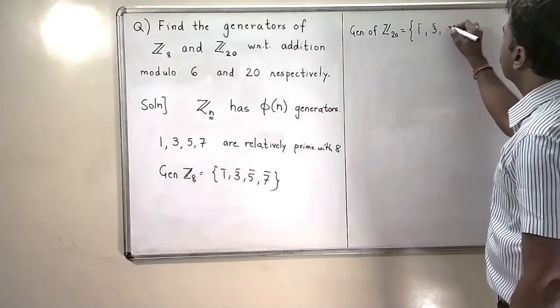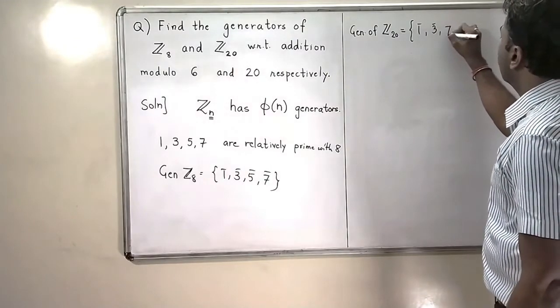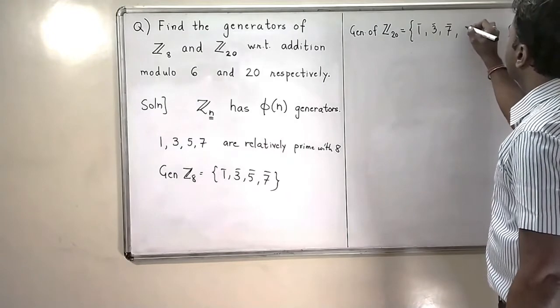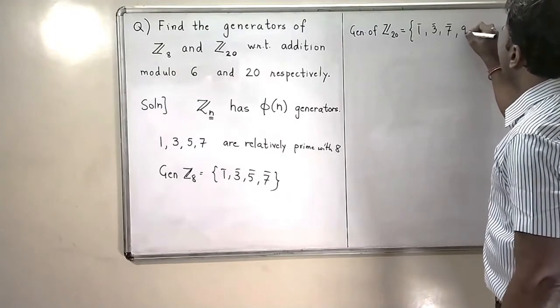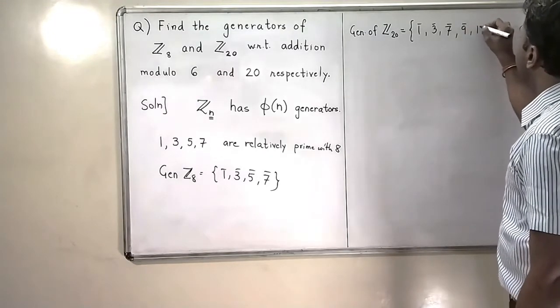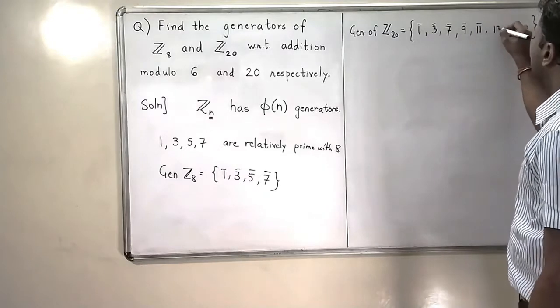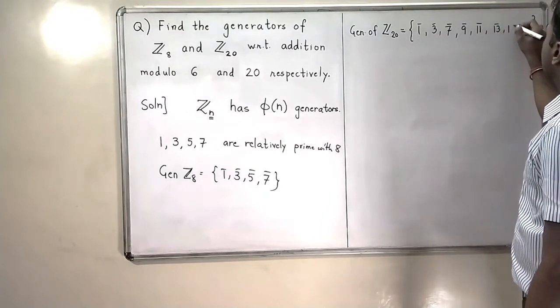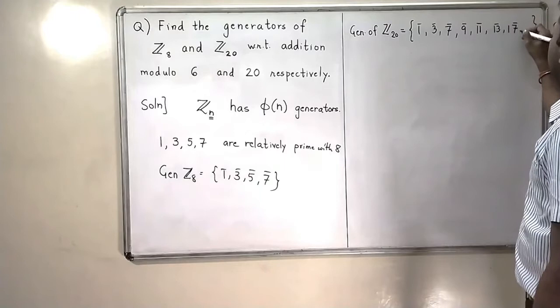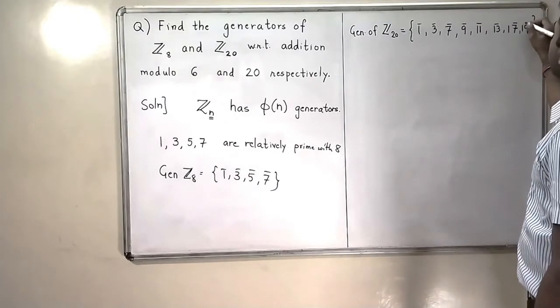Generators of Z20 are 1 bar, 3 bar, 7 bar, 9 bar, 11 bar, 13 bar, 17 bar and 19 bar.